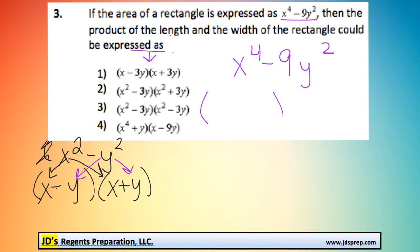So what we're going to do is factor this here. The square root of x to the power of 4 is x squared, and the square root of 9y squared is 3y. In one we'll be adding and in the other one we'll be subtracting.